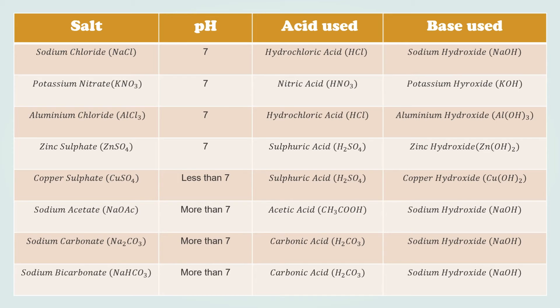You can take a snapshot of this table, which is very important because it gives the chemical formula of all the acids, bases, and salts. The key takeaway is that the pH of a salt can be 7, more than 7, or less than 7 — meaning it can be neutral, basic, or acidic.